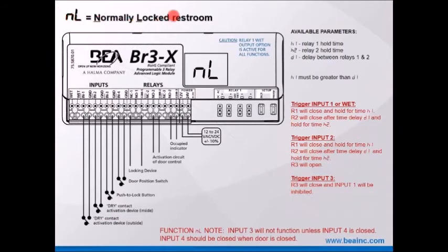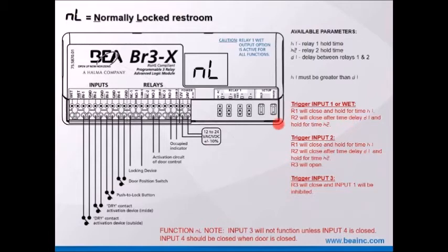NL — normally locked restroom. A dry input triggers input one and ground. Another dry input on input two and ground is for the activation device inside the restroom. Input three is a push-to-lock function, and input four is a door position switch (DPS). Triggering input one will cause relay one to close and hold for H1, relay two will close after D1 delay and hold. Relay three will open. If you trigger input three, relay three will close and input one will be inhibited.